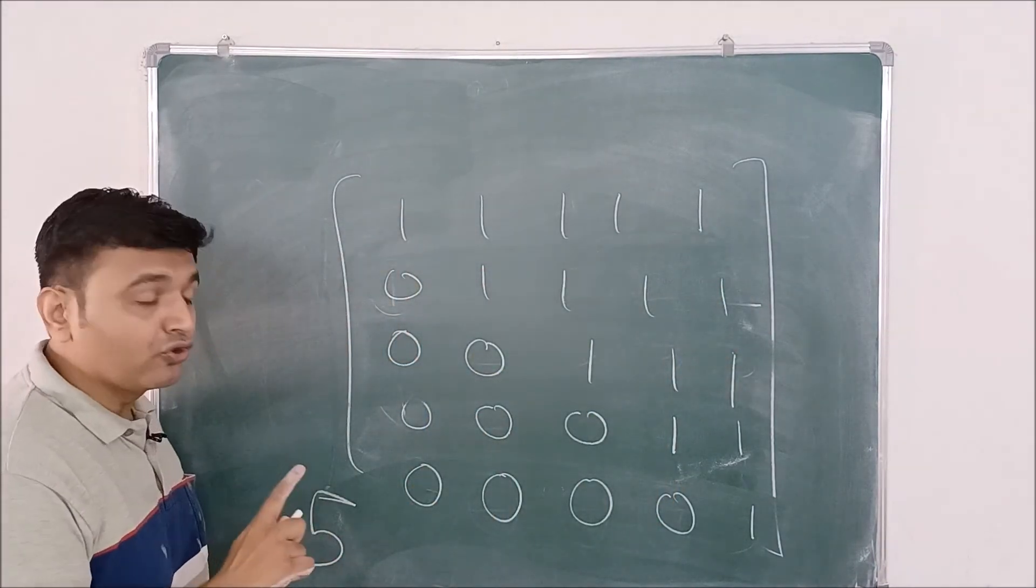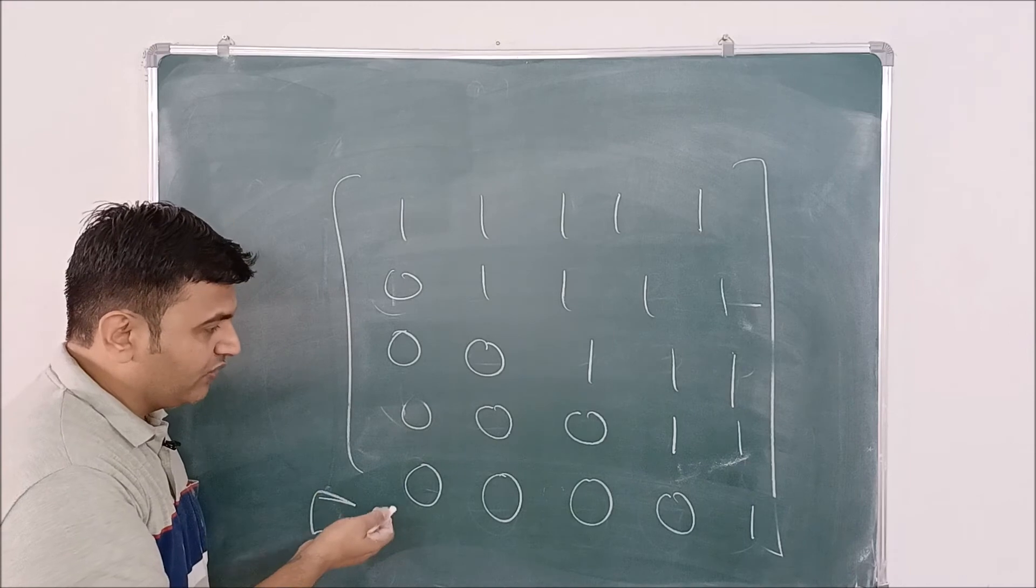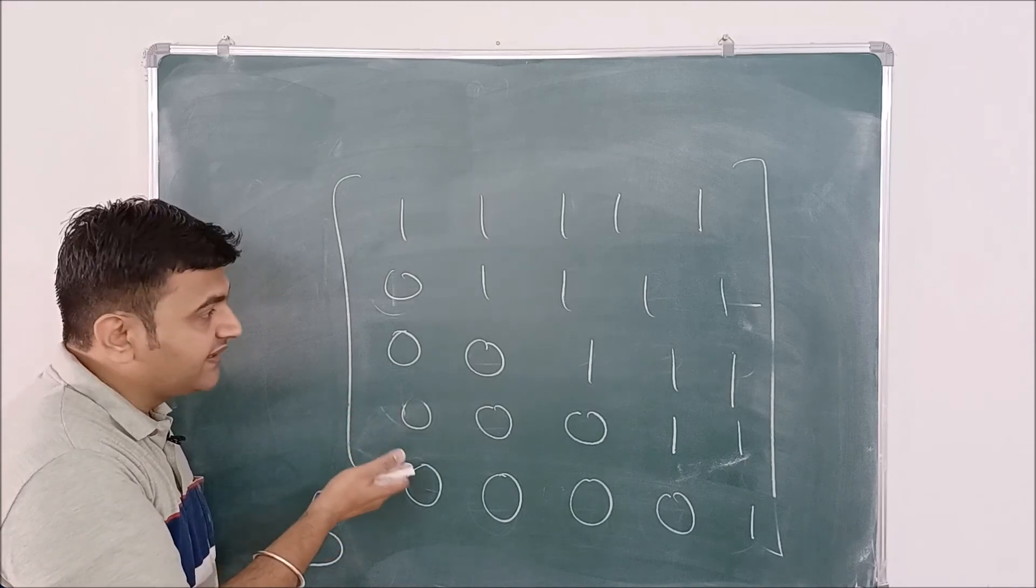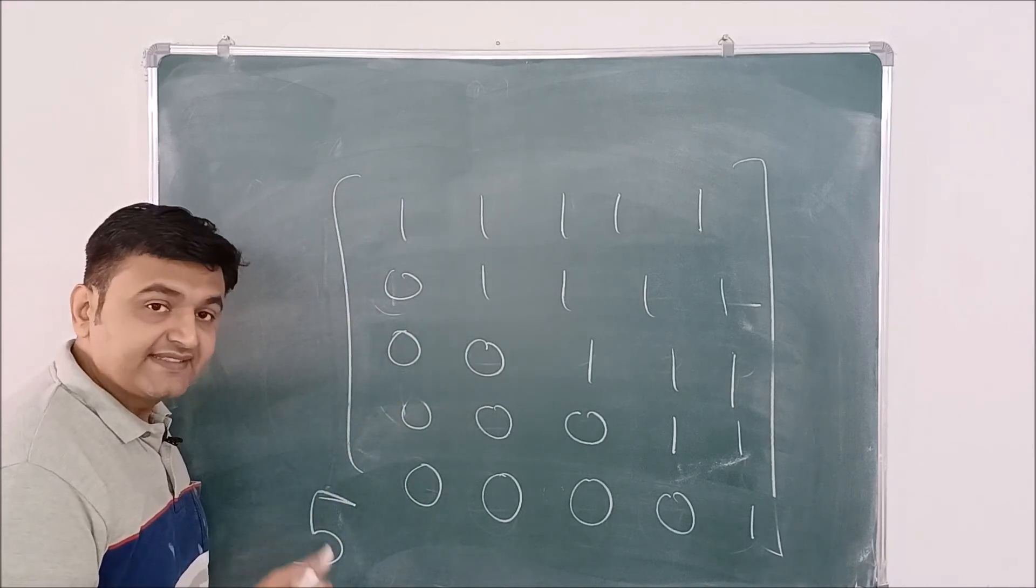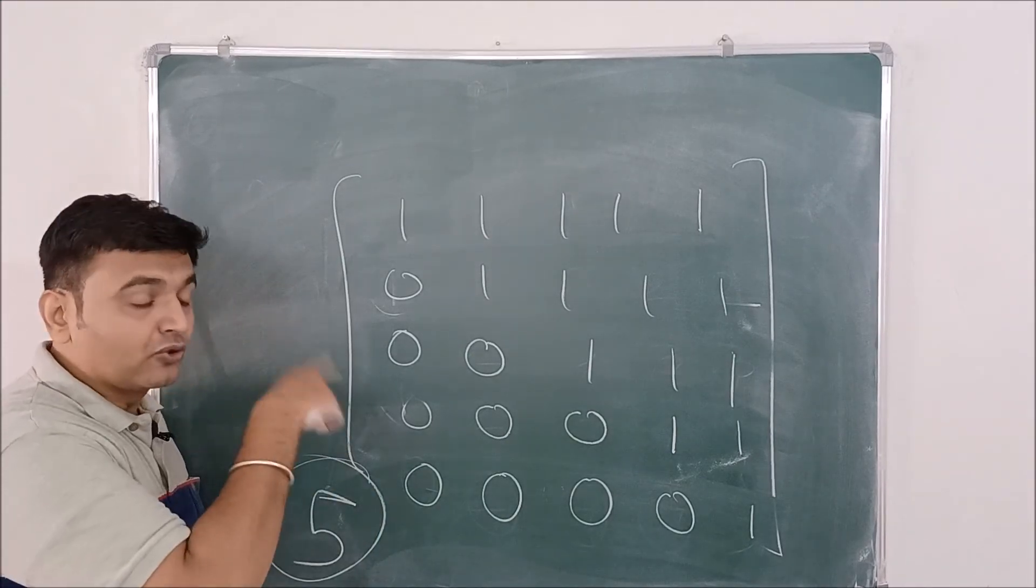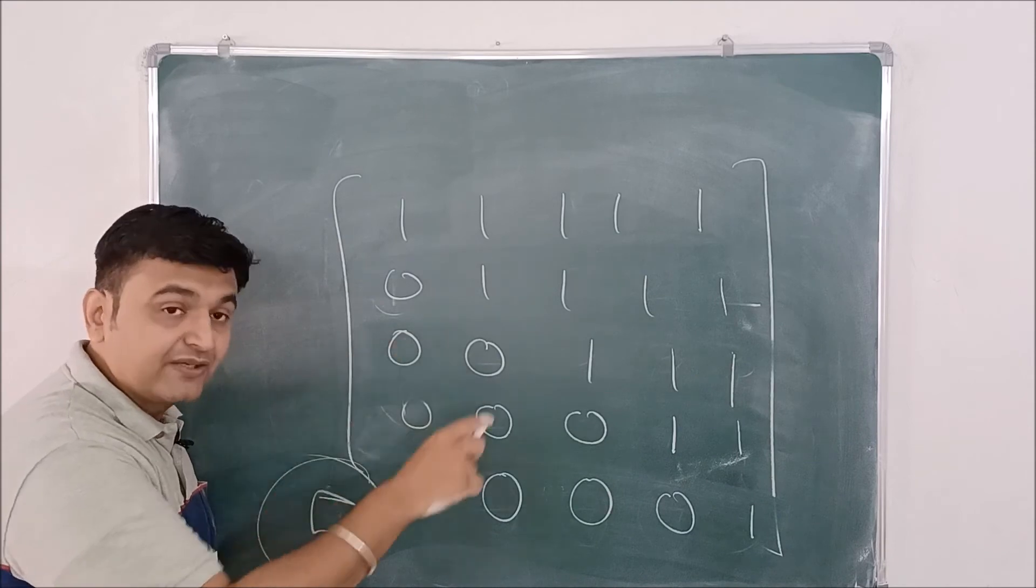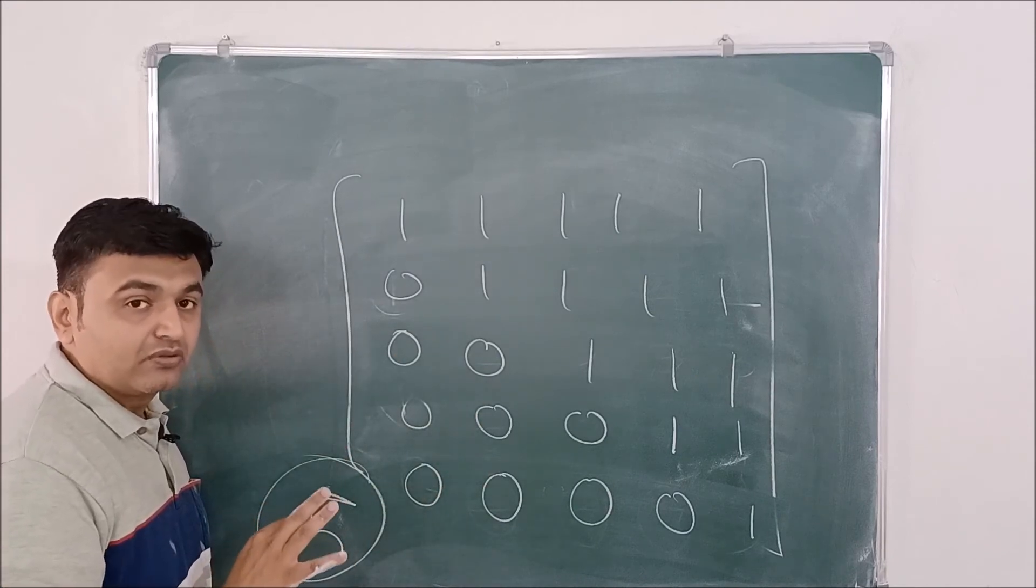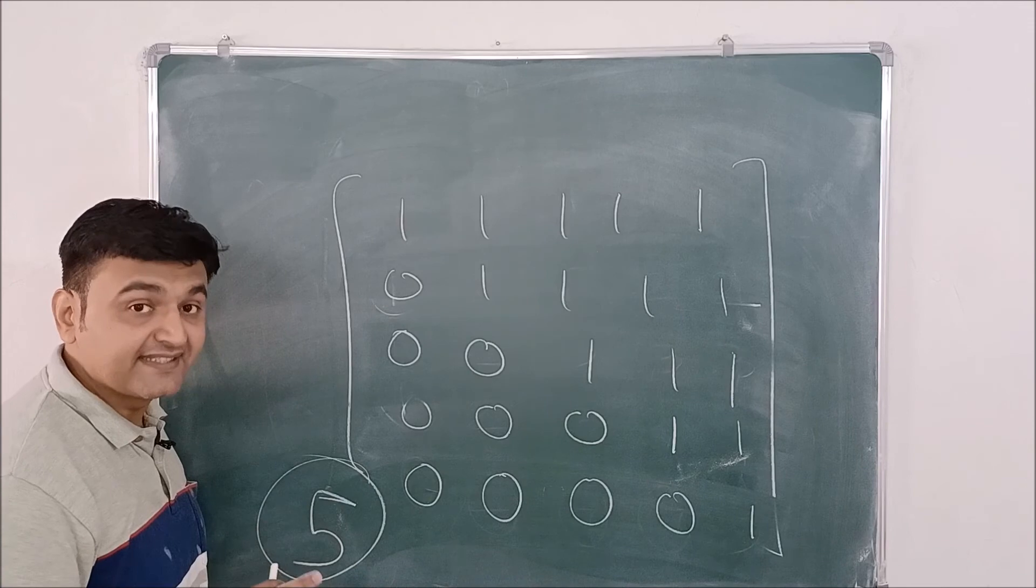So you can see that only in four operations, actually not even four, after doing two operations, you can realize this is the pattern you are getting. So like within 10 seconds, you can say the rank is five. Whereas if you do R2 minus R1, R3 minus R1 in that way, it will take minimum two minutes, whereas here you can see you get the answer in 10 seconds.